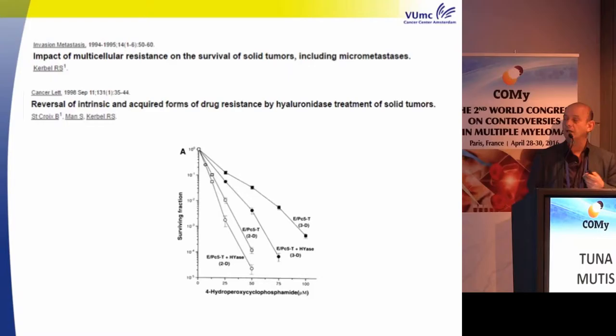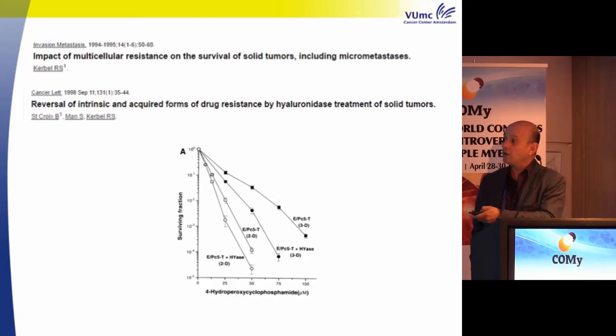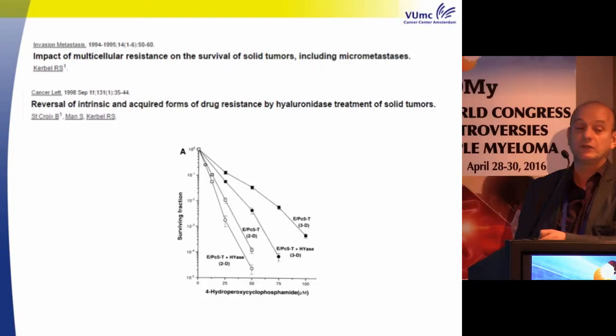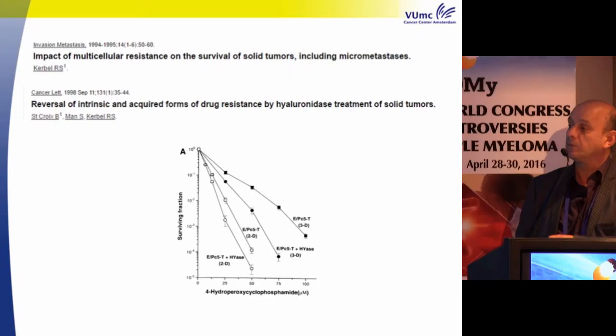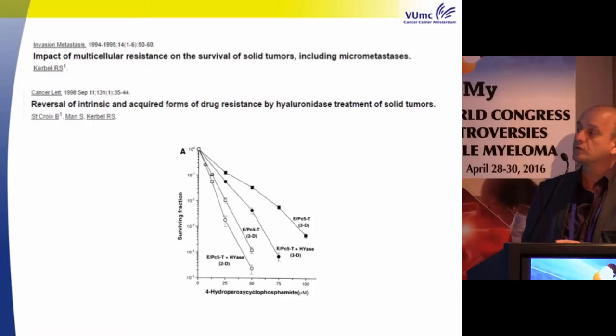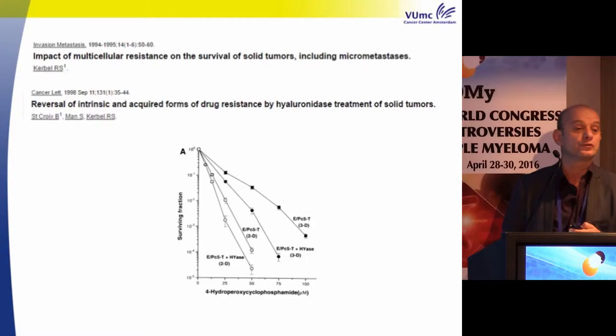The idea of cellular interactions inducing therapy resistance was already recognized more than 20 years ago. Teicher et al. showed in 1998 that a tumor cell in a three-dimensional environment is much more able to survive in the presence of cyclophosphamide compared to a two-dimensional environment, and that using hyaluronidase can reduce this resistance.